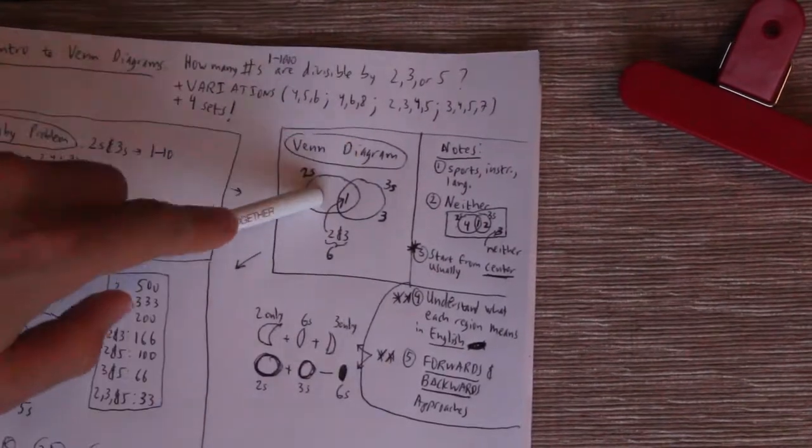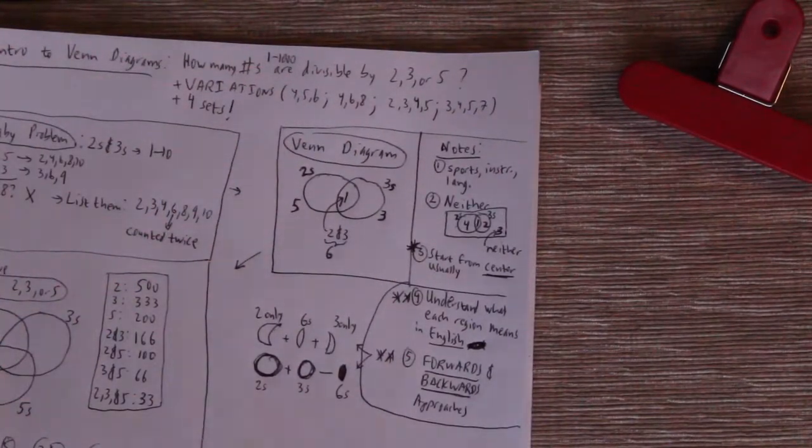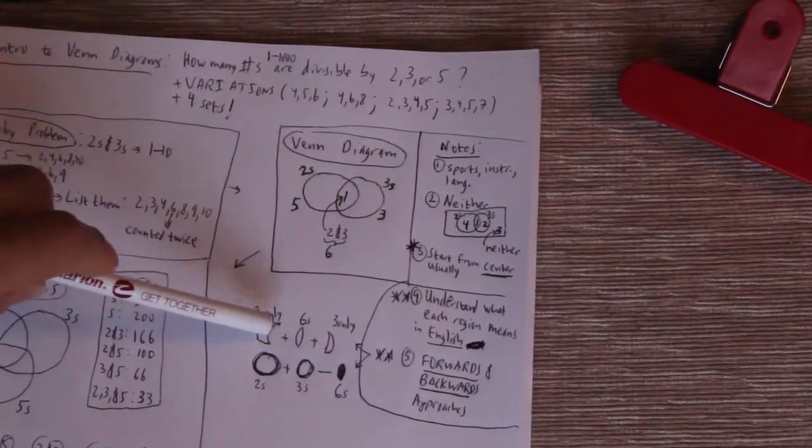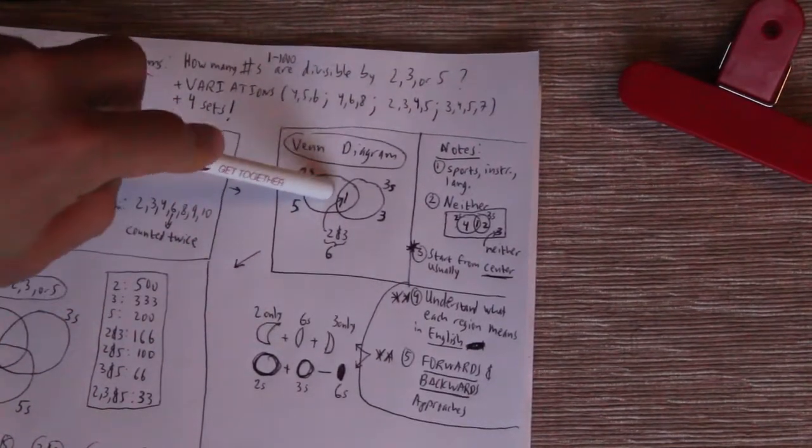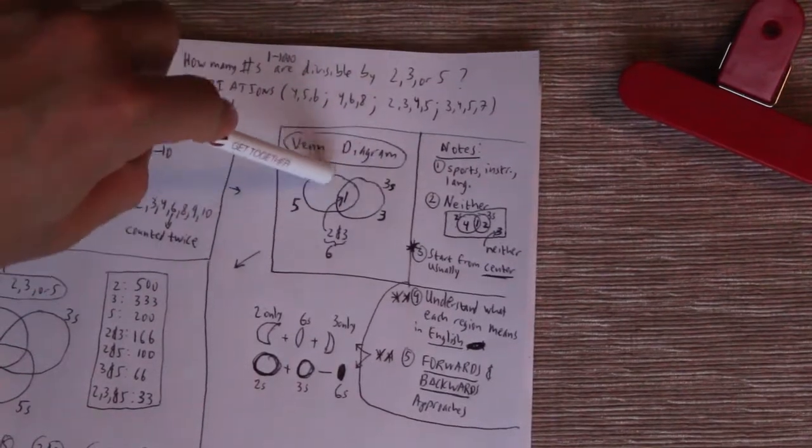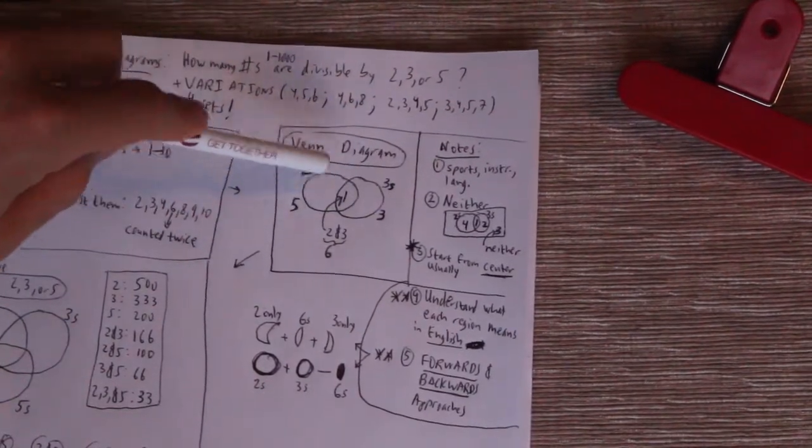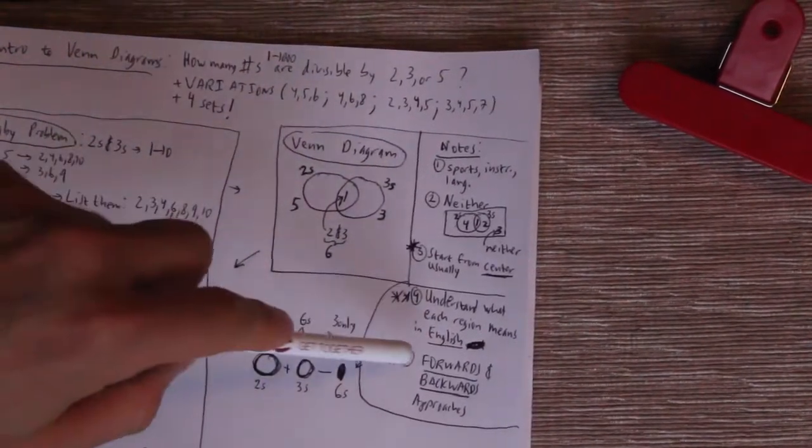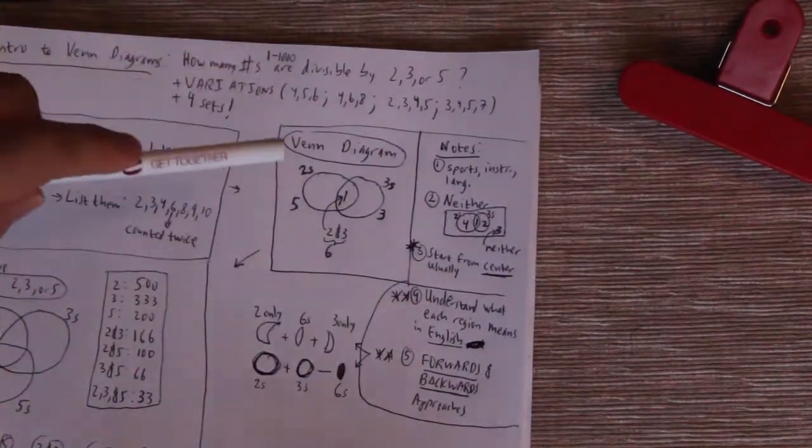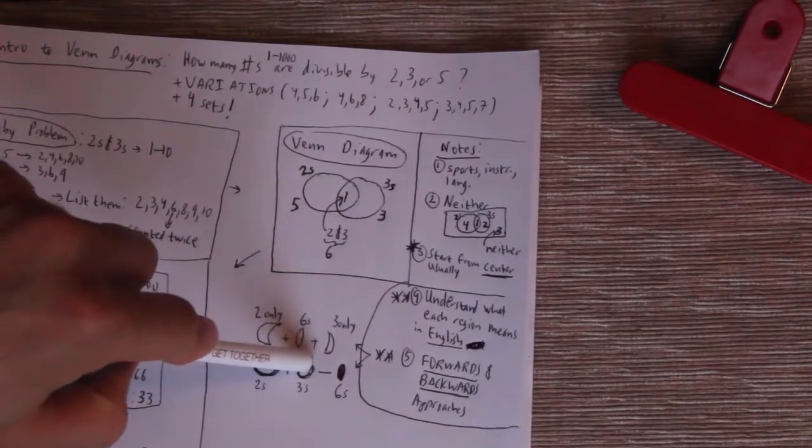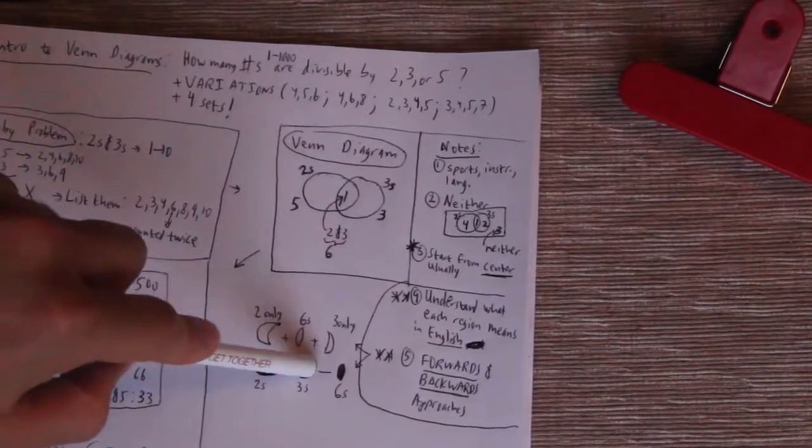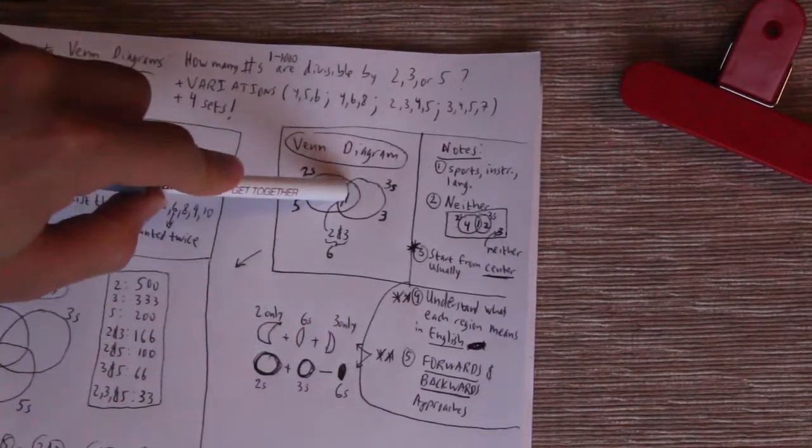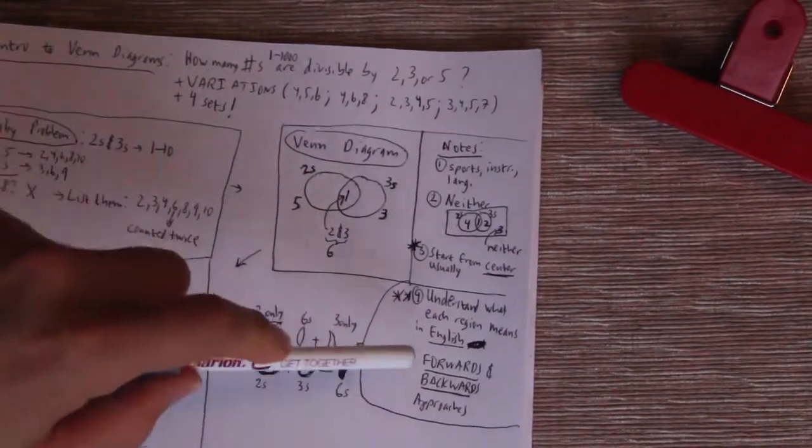Number five, typically when you see these Venn diagram problems, there are two types of approaches, forwards and backwards. So what would be a forwards approach? A forwards approach would be to sum actually all the individual regions. So in our case, that would be 4 plus 1 plus 2, if we happen to have those numbers. Now we don't have those numbers in our original problem. So I probably would not use a forwards approach. Or you could use a backwards approach where you kind of do a crude estimation. You just add the circle, so circle plus circle. So that would be in our case, 5 plus 3, because there are five numbers divisible by two, three numbers divisible by three. And then that middle region would be a one. So it'd be 5 plus 3 minus 1. So that would be the backwards approach.